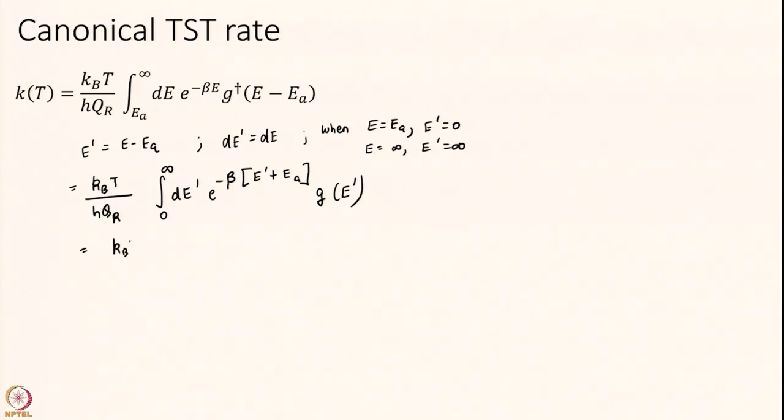Let me just few more steps, almost there. I will write this as Q_R here and I will take e to the power of minus beta E_A outside the integral. Now you realize this integral, just a few slides ago we showed is equal to partition function and this partition function will be the transition state partition function because this G is the transition state. I had forgotten to write this, I remember I am following this G here. So Q dagger over Q_R.